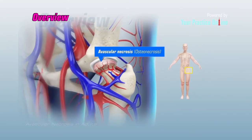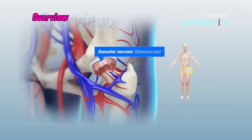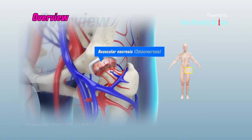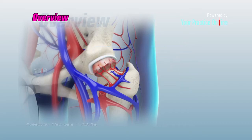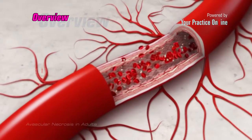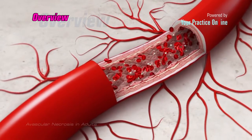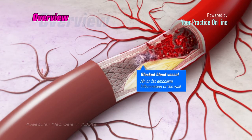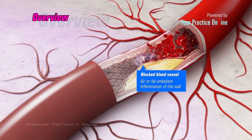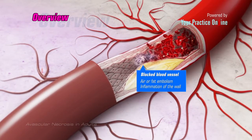Avascular necrosis, also called osteonecrosis, refers to a condition which results from lack of blood supply to bone tissue, leading to bone death. Blood flow to the bone may be adversely affected from damage to the blood vessels, blockage by air or fat embolism in the blood vessels, or by inflammation of the walls of the blood vessels.